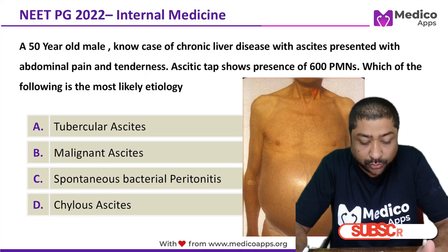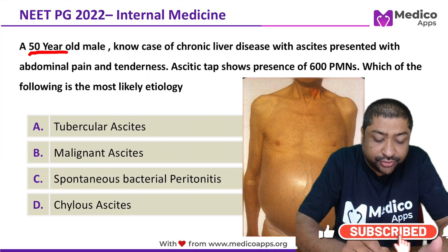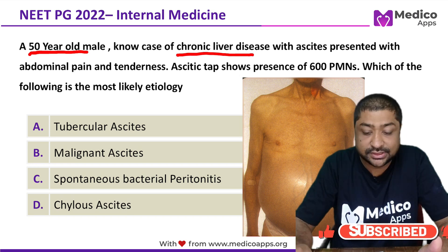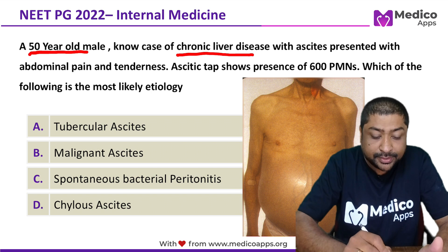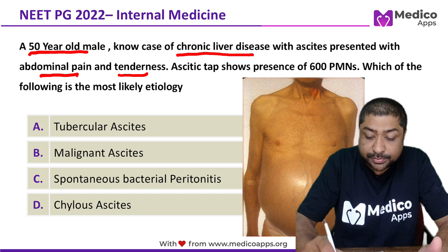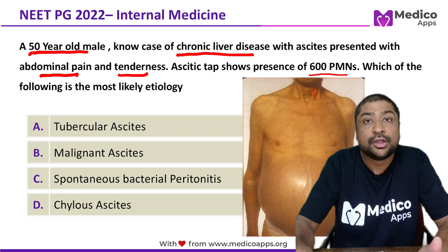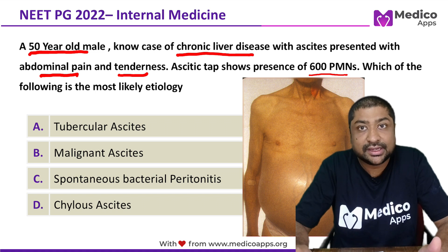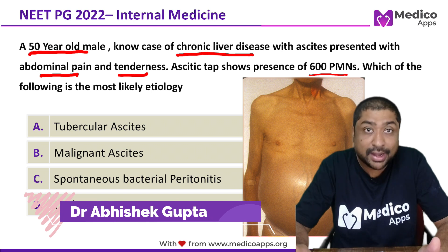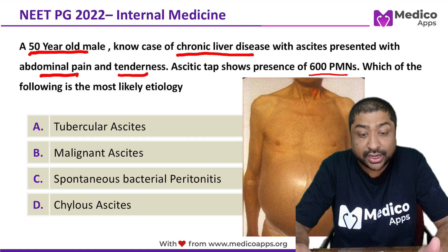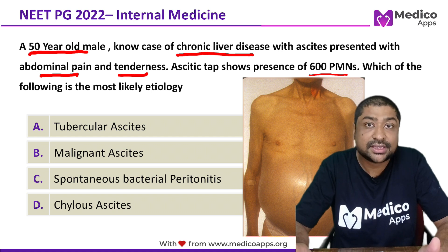This question appeared in NEET PG 2022. It talks about a 50-year-old male who is a known case of chronic liver disease with ascites, presenting with abdominal pain and tenderness. Ascitic tap shows presence of 600 polymorphonuclears. The options are: A) tubercular ascites, B) malignant ascites, C) spontaneous bacterial peritonitis, and D) chylous ascites.